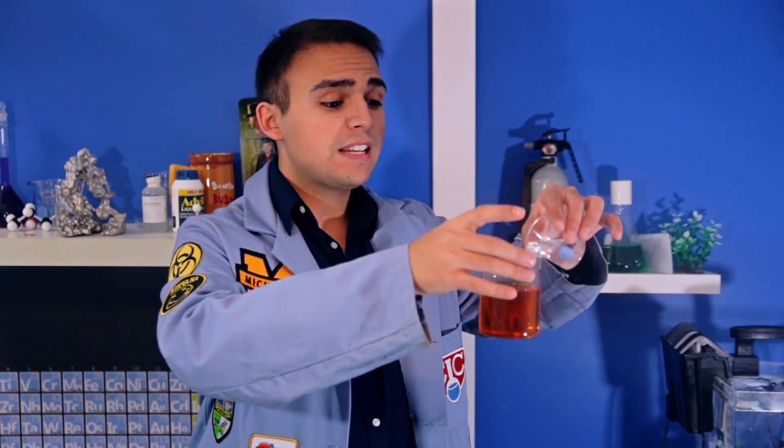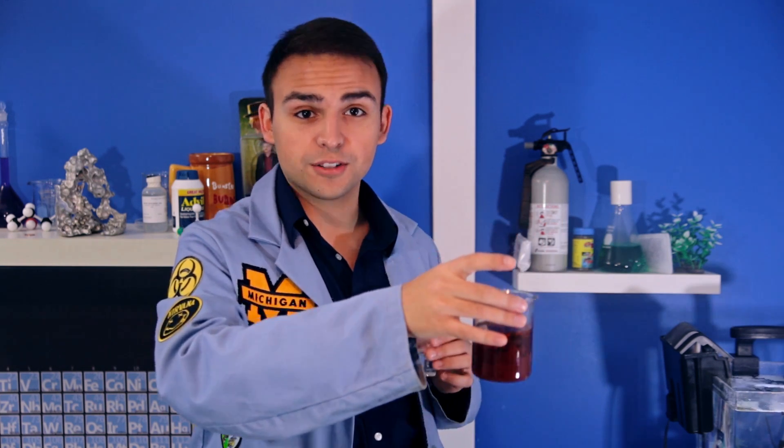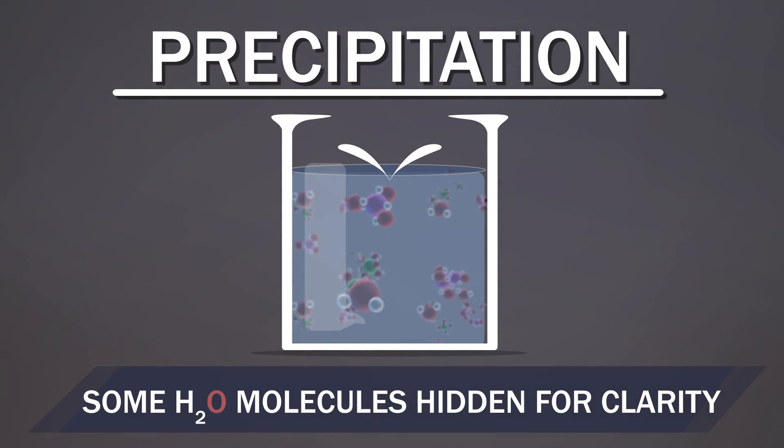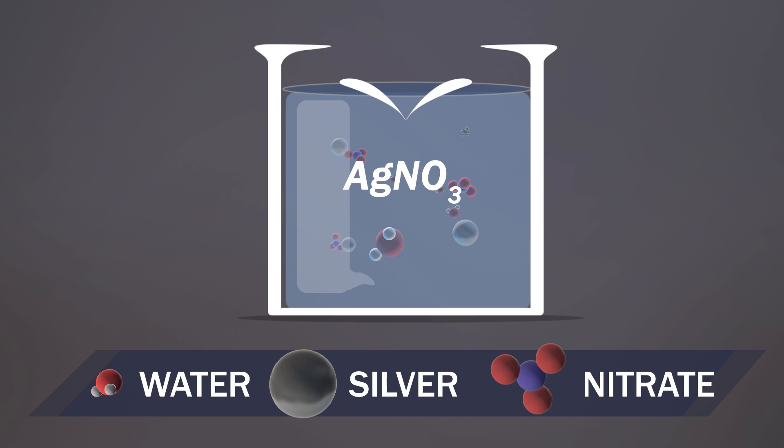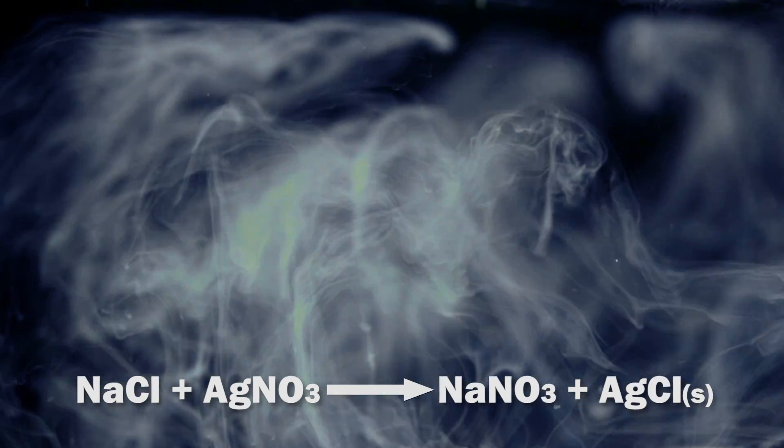Now, of course, not everything can dissolve in water. And it's for that reason that the precipitation reaction occurs. In this solution, our ions are always colliding with one another. If two of those ions — say silver and chloride — collide, and they can make a stronger bond to each other than the surrounding water molecules, they form a new, insoluble, solid compound: silver chloride.